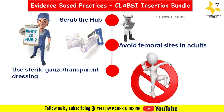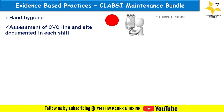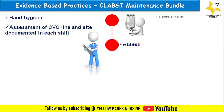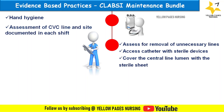Maintenance bundle interventions include: perform hand hygiene before any task on the central line; assess and document the central venous catheter line and site each shift, checking for redness or oozing and reporting to the physician immediately; assess for removal of unnecessary lines — remove lines immediately once infusion is complete to prevent backflow and occlusion; and access the central venous catheter only with sterile devices. Cover central line lumens with a sterile sheet.